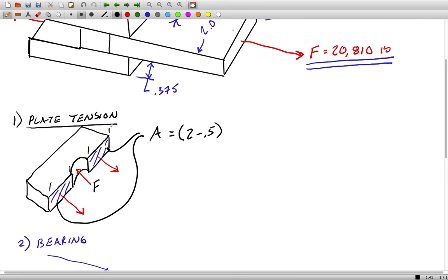Then we want to multiply by the thickness to get an area, and that's 0.9375 inches squared.